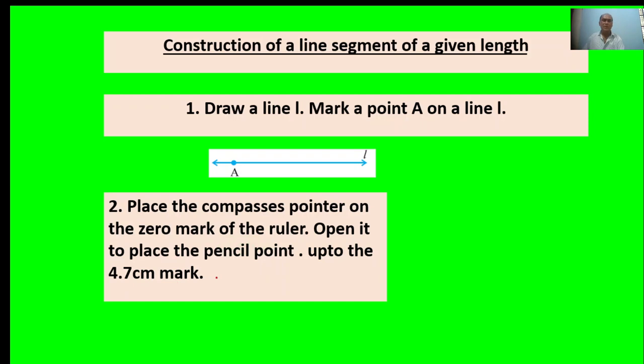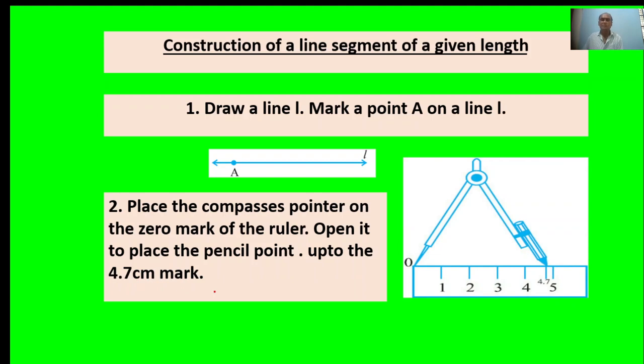Second point: Place the compass's pointer on the zero mark of the ruler. Open it to place the pencil point up to the 4.7 mark. Here, the figure shows 4.7 centimeters.